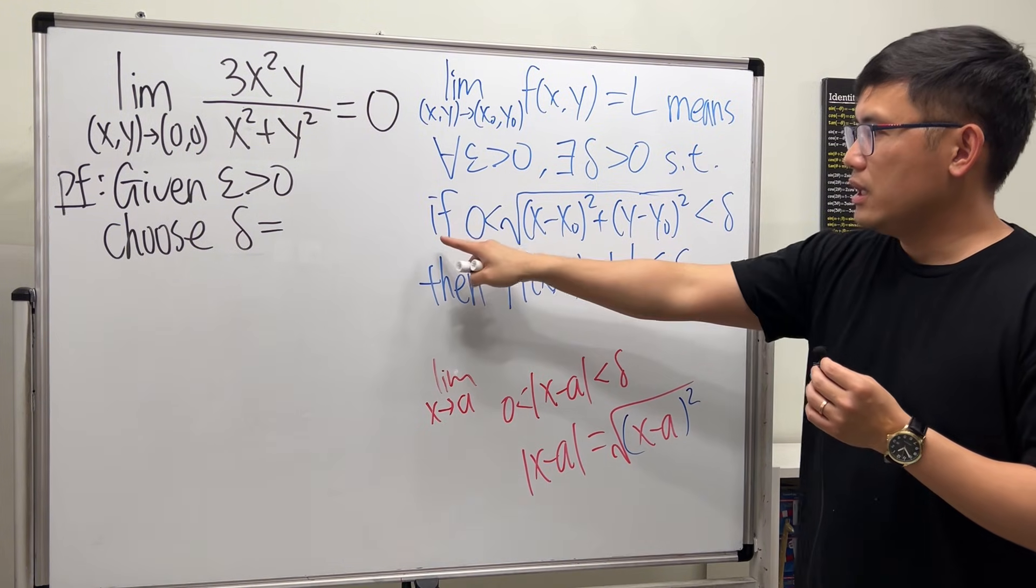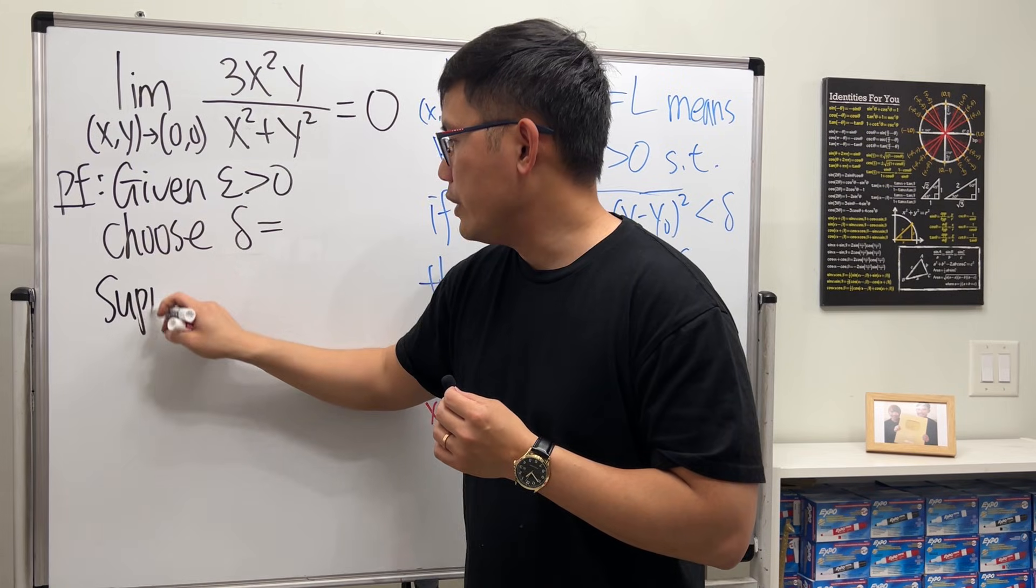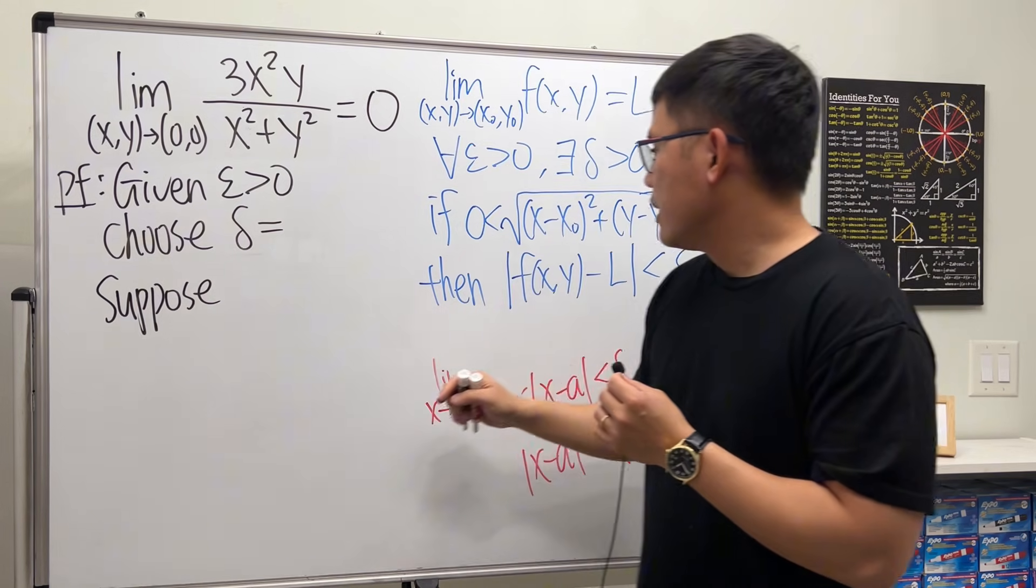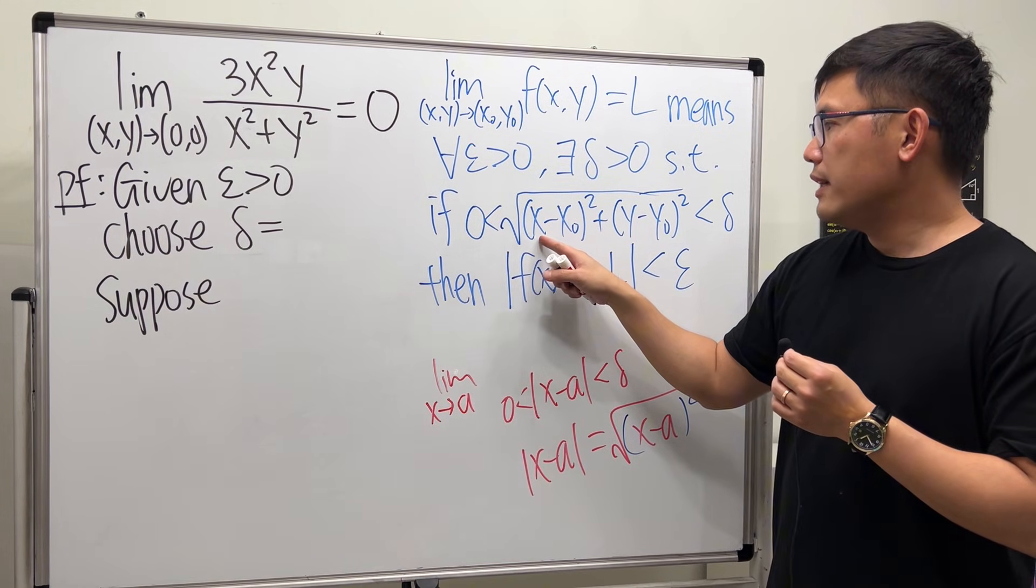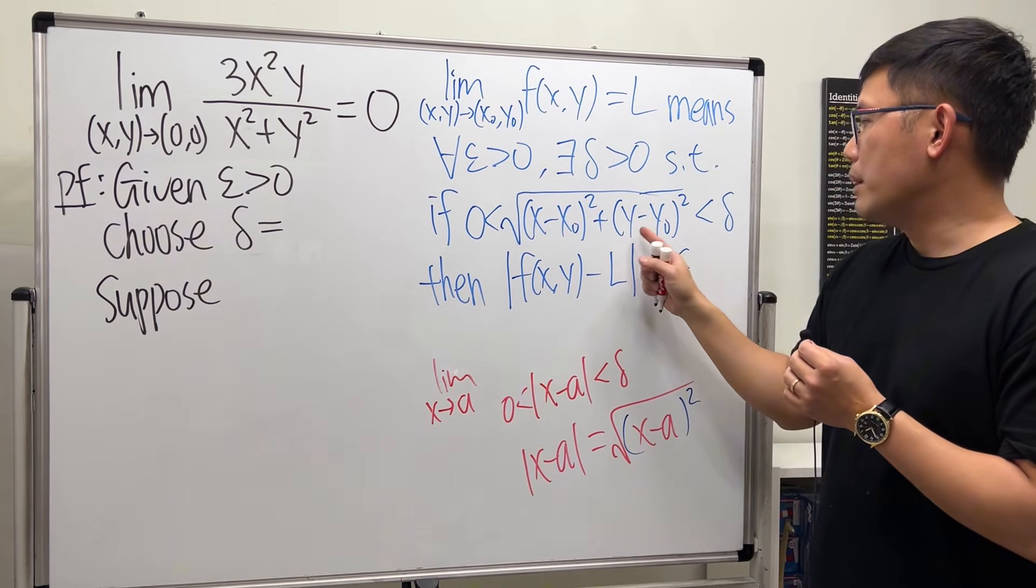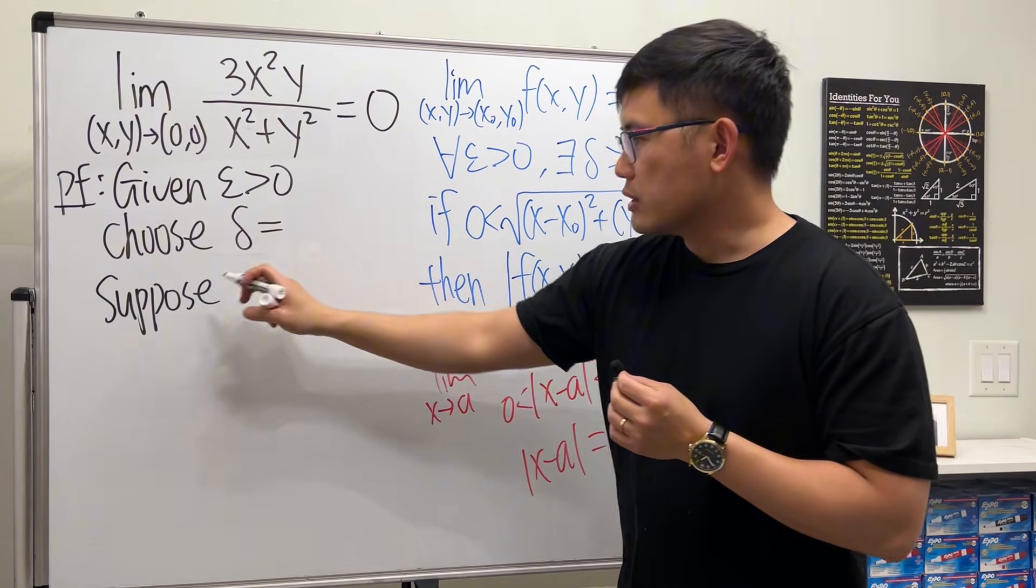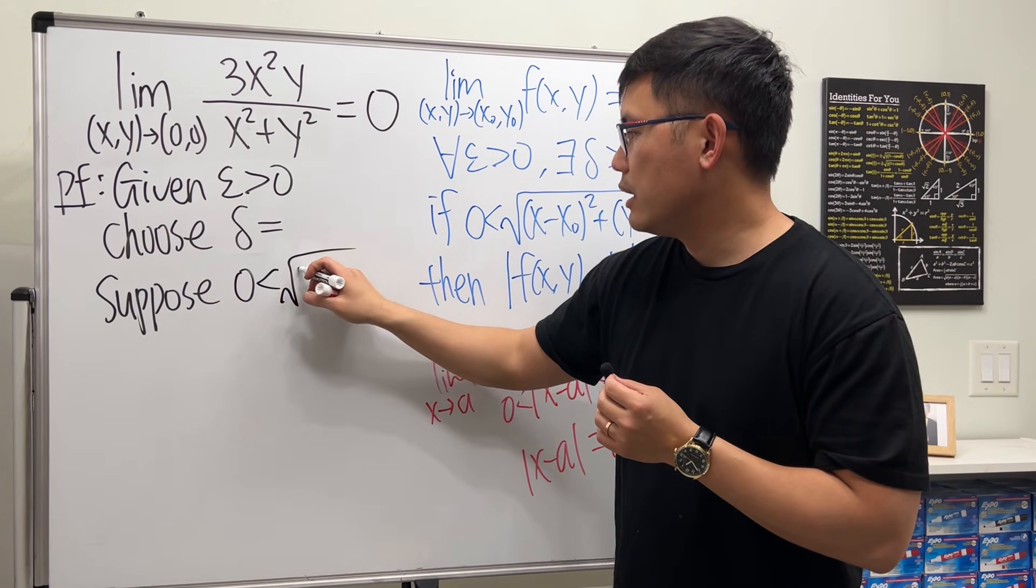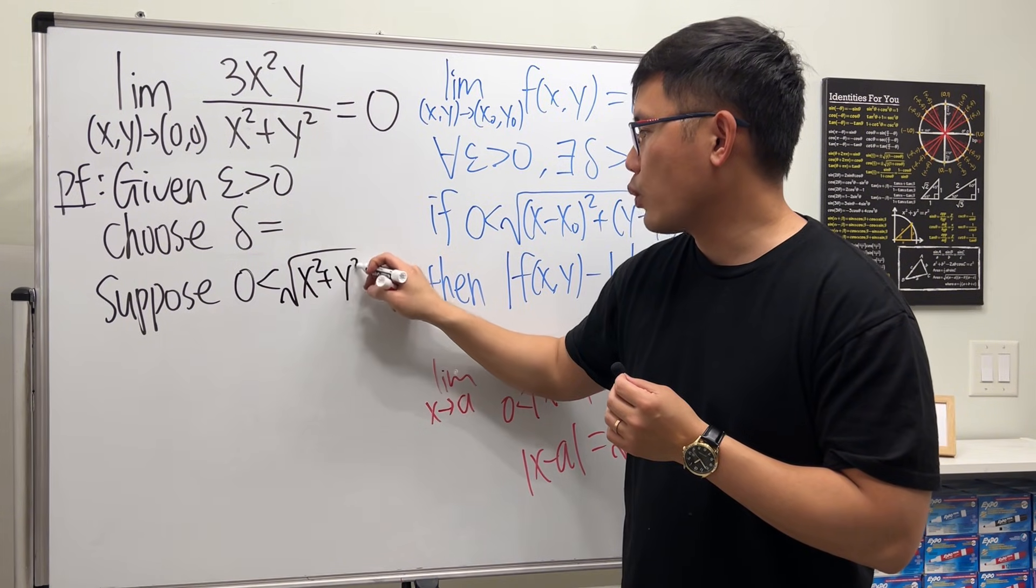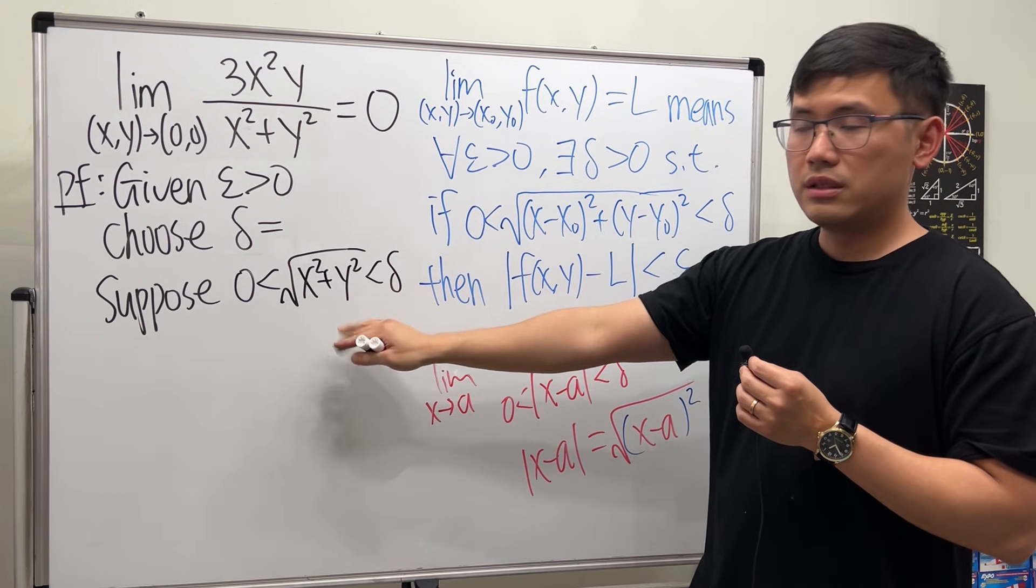Such that if, so this is the assumption that we are going to make. And let's just say, suppose we have that assumption. So, we have x - x0. In this case, it's just x - 0. And then y - y0. In that case right here, it's just y - 0. So suppose 0 < √(x² + y²) < delta. It's this right here. Suppose that.